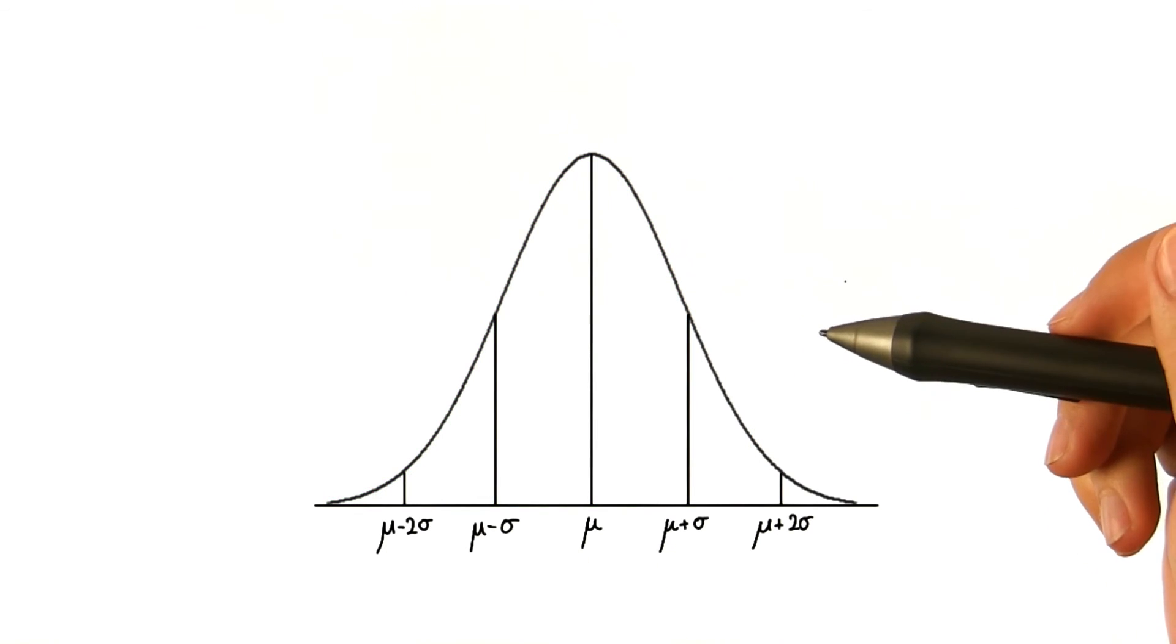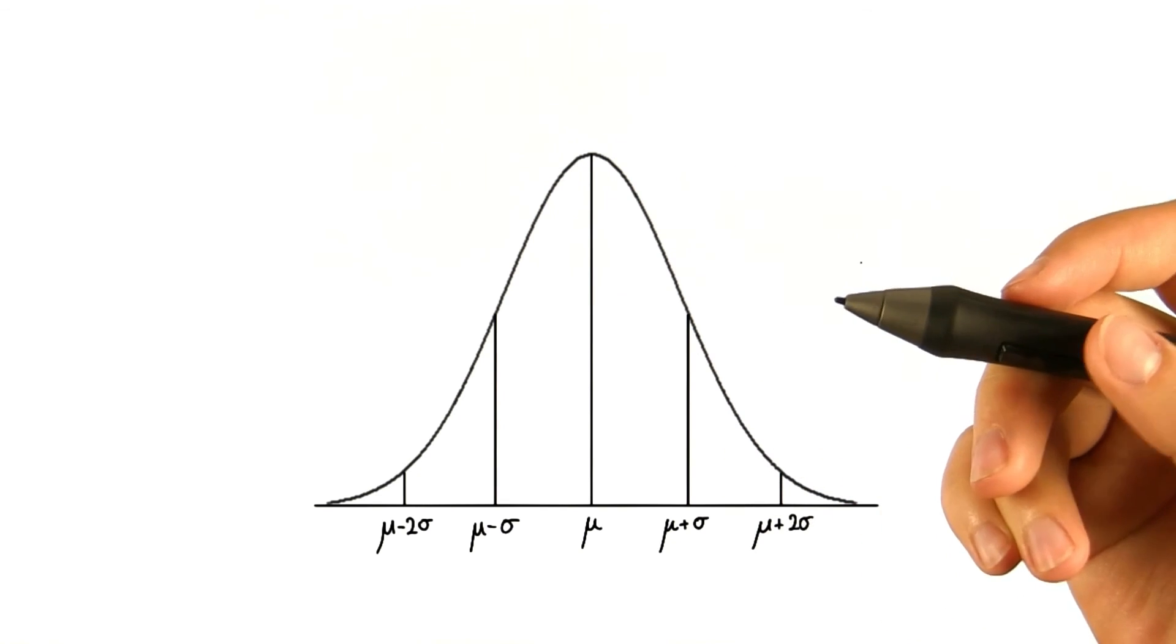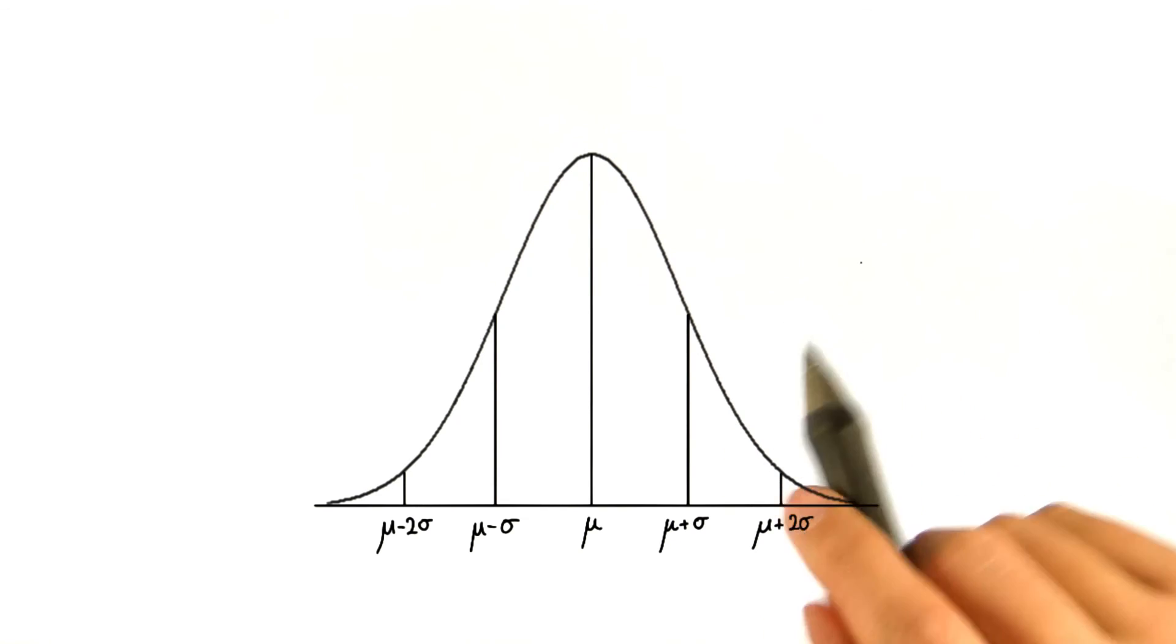What's an example in which we might want to know the proportion less than or greater than a particular number? Let's illustrate this with another story.